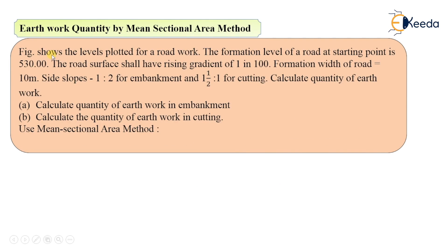The problem statement states that the figure shows levels plotted for a road work. The formation level of the road at the starting point is 530 meters. The road surface shall have a rising gradient of 1 in 100. The formation width is 10 meters. Side slopes are given as 1:2 for embankment and 1.5:1 for cutting.